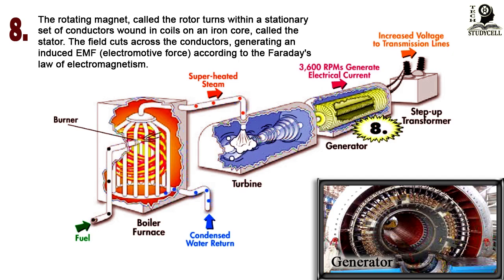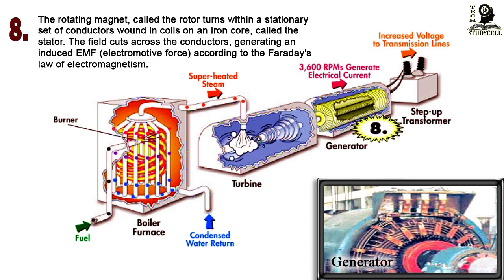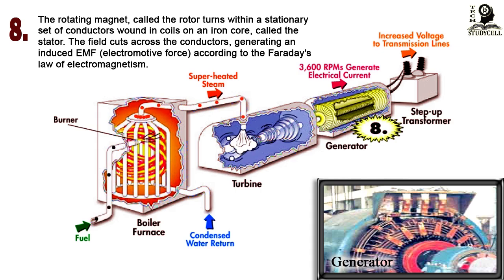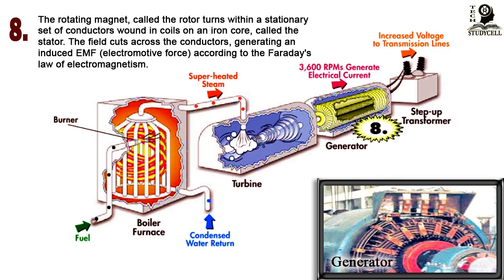The field cuts across the conductors, generating an induced EMF (electromotive force) according to Faraday's law of electromagnetism, as the mechanical input causes the rotor to turn. Thus the mechanical energy in the turbine is changed to electrical energy in the generator. As it is cheaper to generate at a relatively lower voltage and then step it up for transmission to reduce transmission loss.